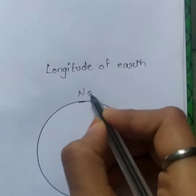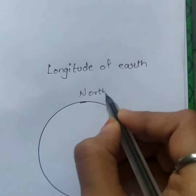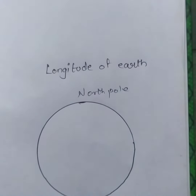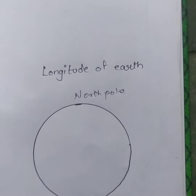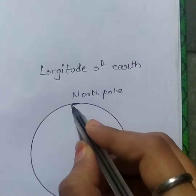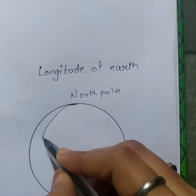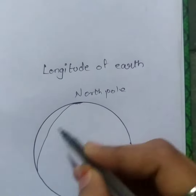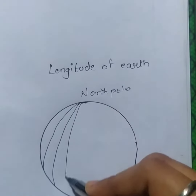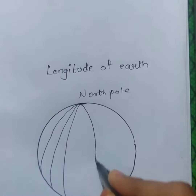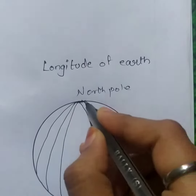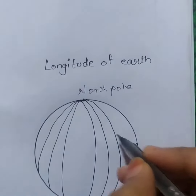This is our North Pole and this is our South Pole. The line which passes from the North Pole towards the South — this line is known as longitude.